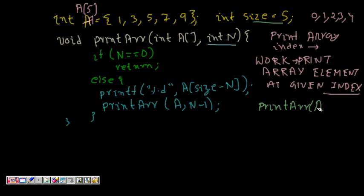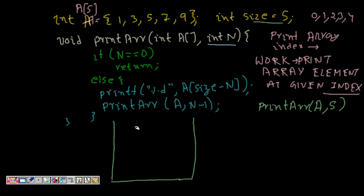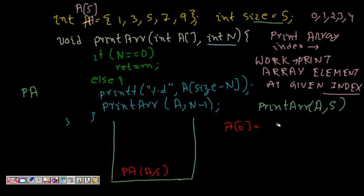We call printArray(a, 5). We'll trace this with a stack — so we push pa(a, 5). Since n is 5, it's not 0, so it goes to the else part and prints a[size - n] = a[5 - 5] = a[0], which is 1.